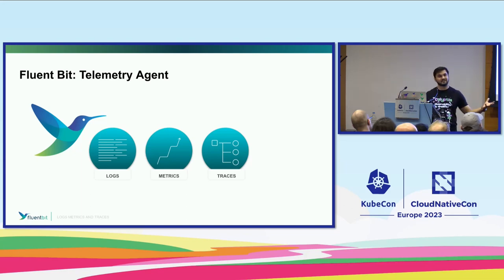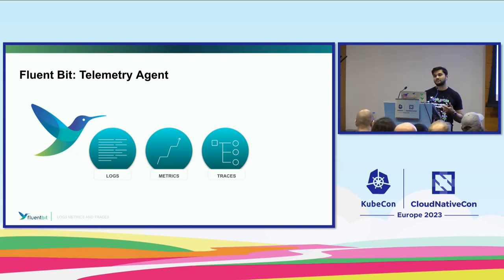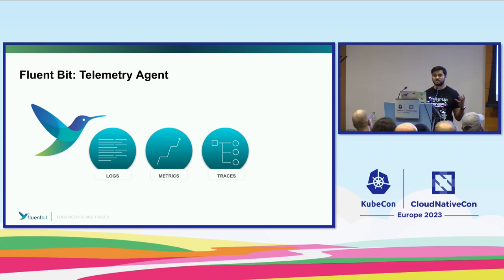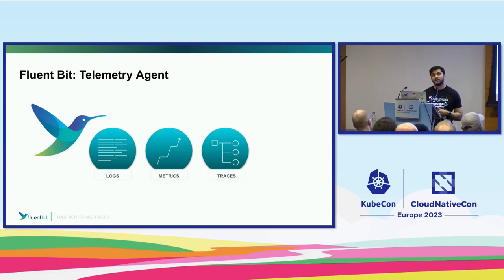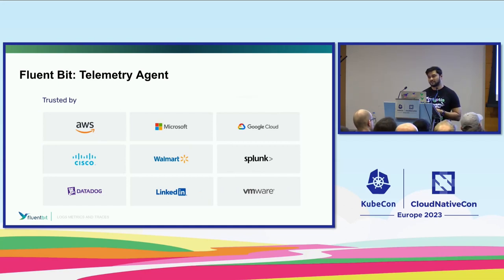From a metrics side, Prometheus started exploding, so we wanted to integrate well with that ecosystem. We added Prometheus scraping, node exporter metrics, Windows exporter metrics, the ability to remote write to a Prometheus endpoint, or export those metrics over an HTTP endpoint. And now with traces and the OpenTelemetry wave — where we're finally getting nice protocols and schemas for all these data signals — we've added that support. From a tracing standpoint, you're going to be able to do OpenTelemetry input and output for logs, metrics, and traces.